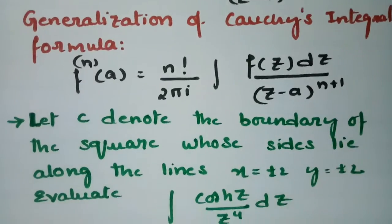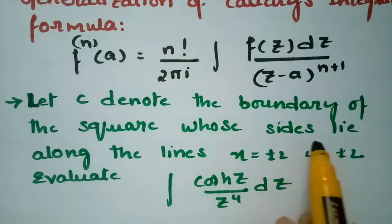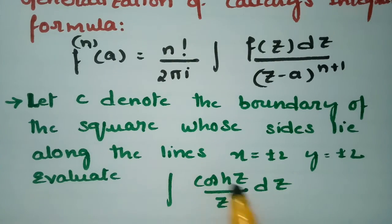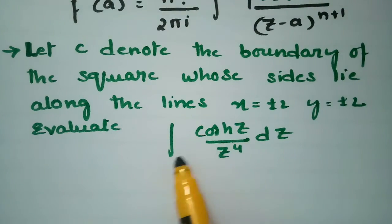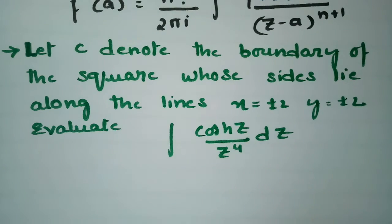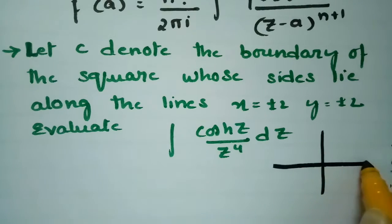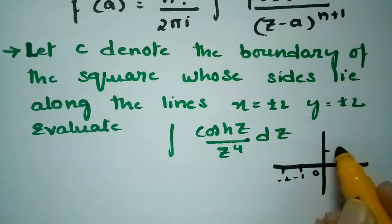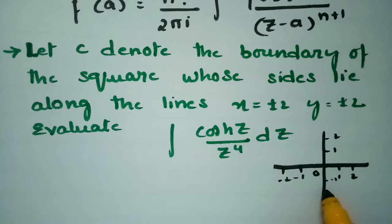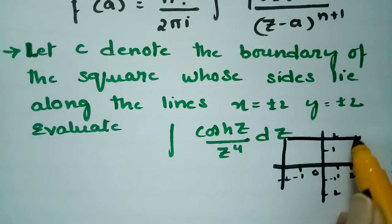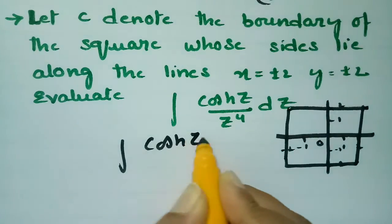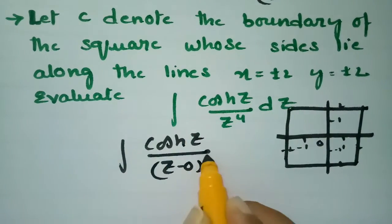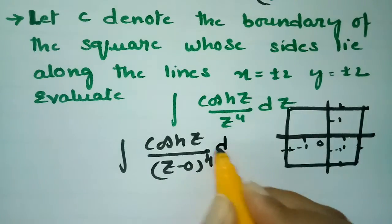Using this formula, we have to evaluate the given integral. C denotes the boundary of the square whose sides lie along the lines x = ±2 and y = ±2. Within this boundary, we need to evaluate ∮ cosh(z) / z⁴ dz. The integrand can be written as cosh(z) / (z − 0)⁴ dz.